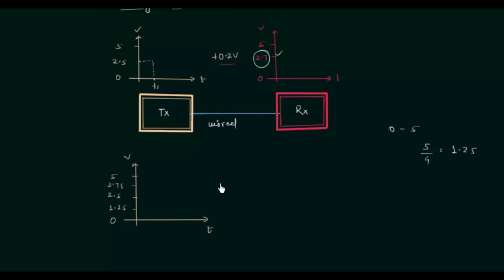Again a noise of 0.2 volt is added in this channel. On receiver side we will have 2.5 plus 0.2 equals to 2.7 volts.